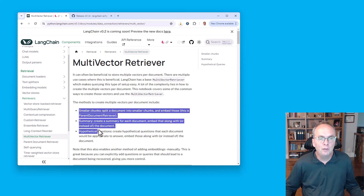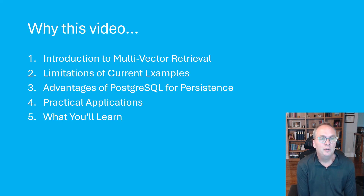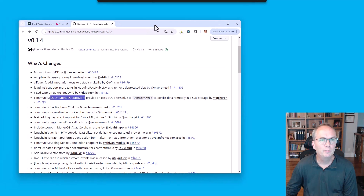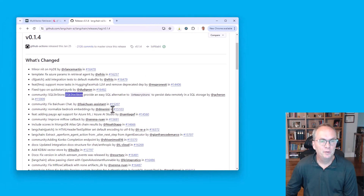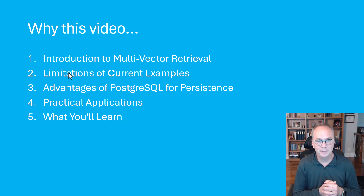In this video, we are going to cover all three of them. Most examples that I found on the internet implement the multi-vector retriever using the in-memory document store, which is fine when you're prototyping. But when you're doing a production-grade application, we need to have a way for our vectors to be persistent. Langchain introduced in version 0.1.4 an SQL doc store that I decided not to use because I needed the ability to control the table name and also add my own indexes. So for those reasons, I decided to create my own implementation using PostgreSQL.